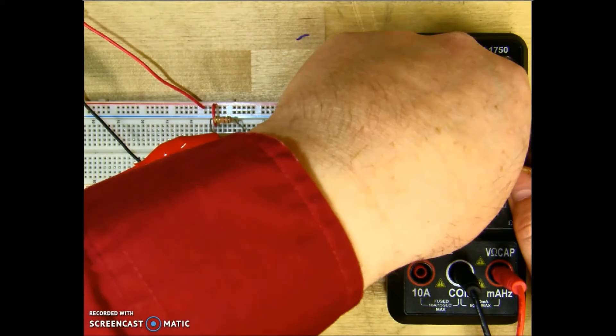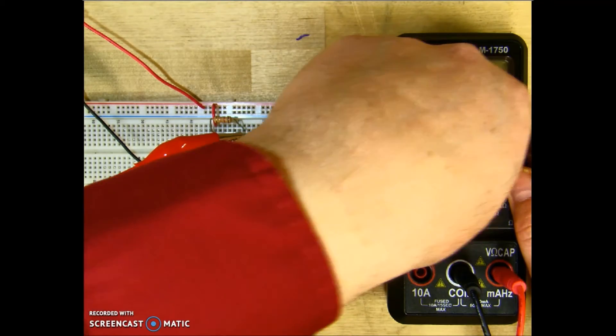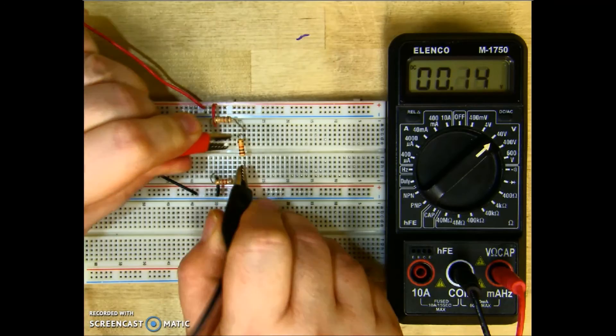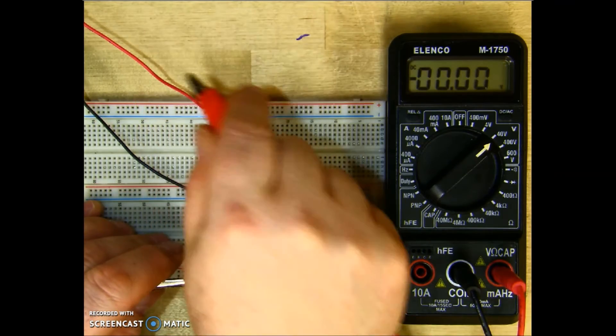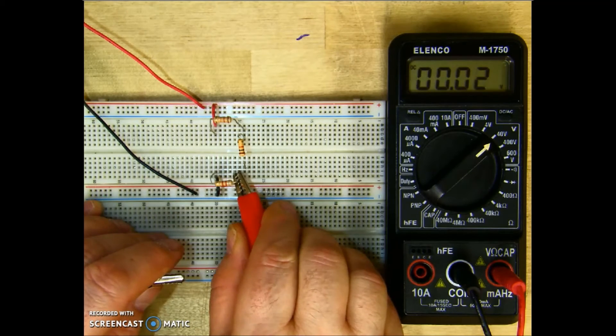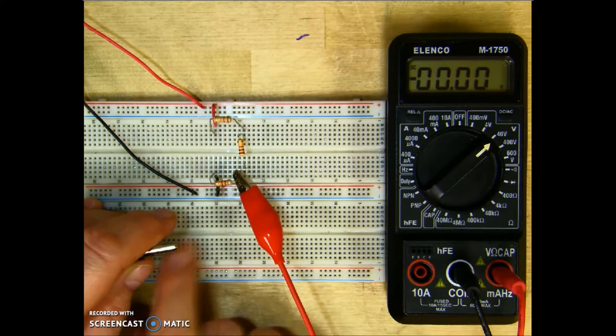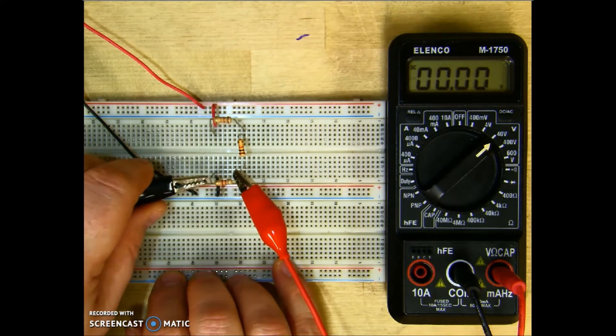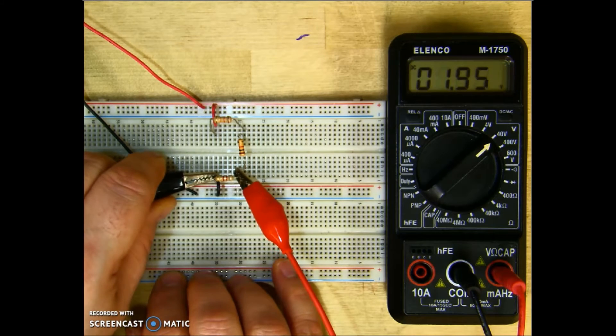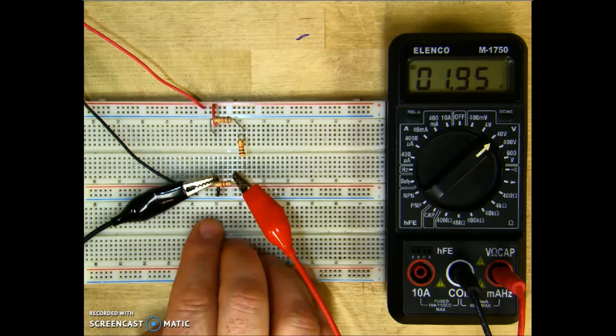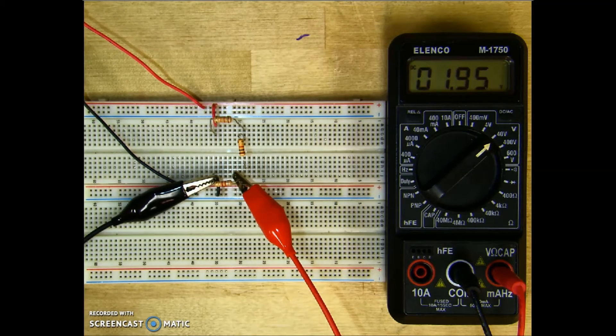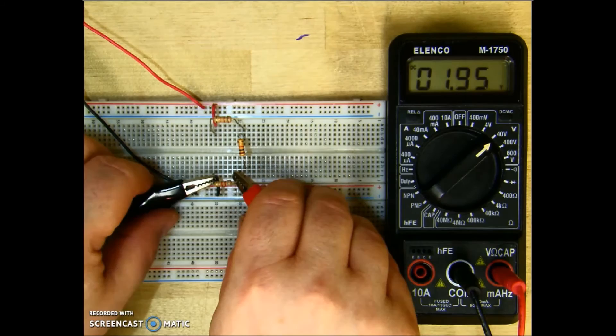So I'm going to go to my next resistor, and I want to turn my meter back up. And again, I want my positive lead closest to the positive source. So I will connect my positive lead on that side of the resistor and the negative on the other one. And across R3, I have 1.95 volts. Now I had done the math previously, and this is pretty close to what the math shows.